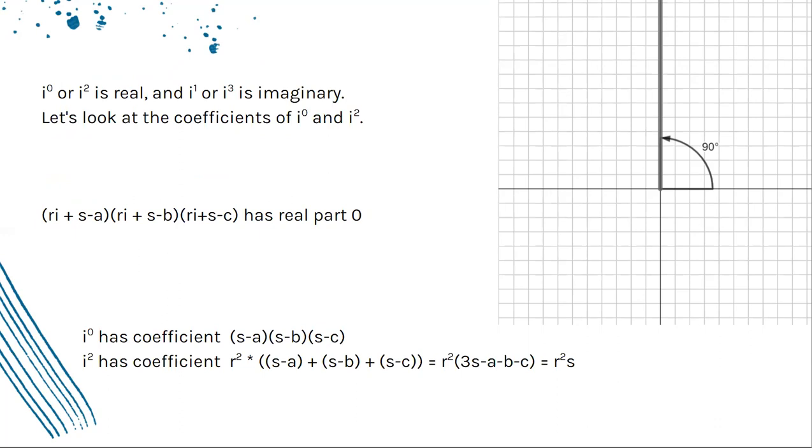When we multiply this out, i to the zeroth power is going to have coefficient (S - A)(S - B)(S - C), because you have to multiply the real parts here. Now our i² is going to have a coefficient of R² times (S - A + S - B + S - C).